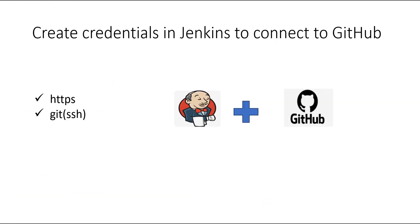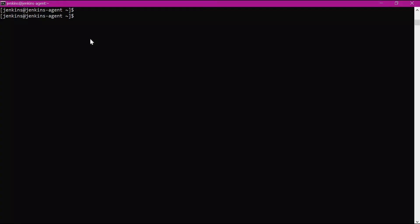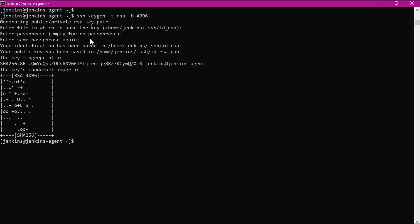Now let us generate credentials for SSH protocol. For SSH, we need to generate the private key and public key. We will generate them in a Jenkins agent, and we will copy the public key to the GitHub server. Here on the Jenkins agent machine, I am using SSH keygen to generate the private key and public key. Now we have generated both keys.